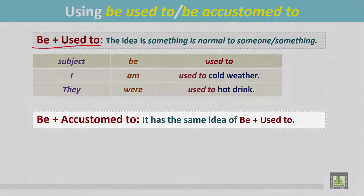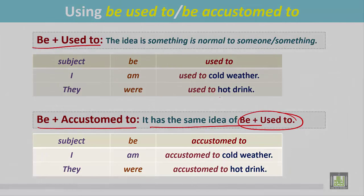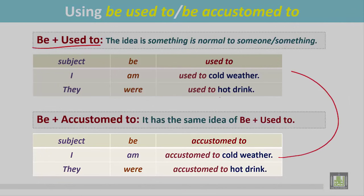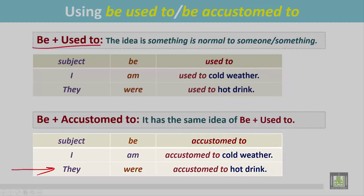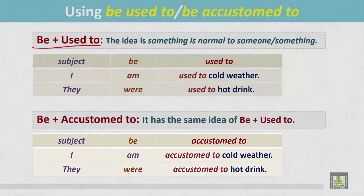Be plus accustomed to has the same idea as 'be used to'. See the examples: 'I am accustomed to cold weather.' These two sentences give the same idea — that cold weather is normal to me. 'They were accustomed to hot drink' — the hot drink is normal to them.